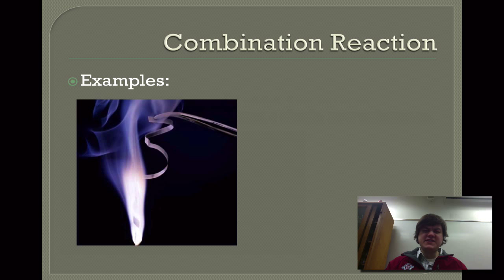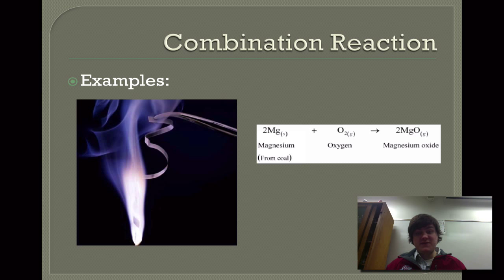An example that you've seen in class already is magnesium reacting with oxygen to form magnesium oxide. This releases a lot of energy, has a very bright glow, and is the following combination reaction. For the balanced chemical equation, we have two magnesium bonds with an oxygen molecule, which is O2, and it gives us two formula units of magnesium oxide.